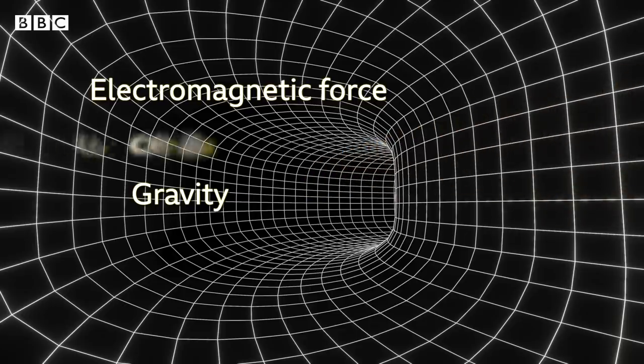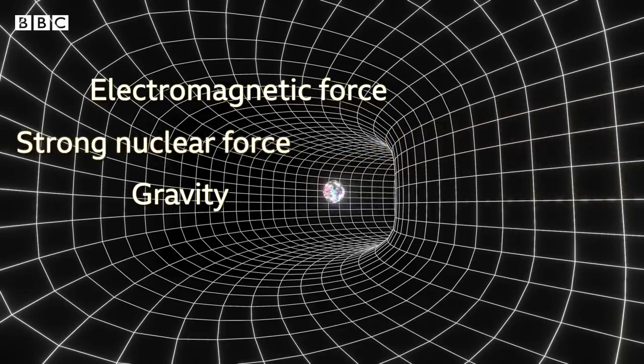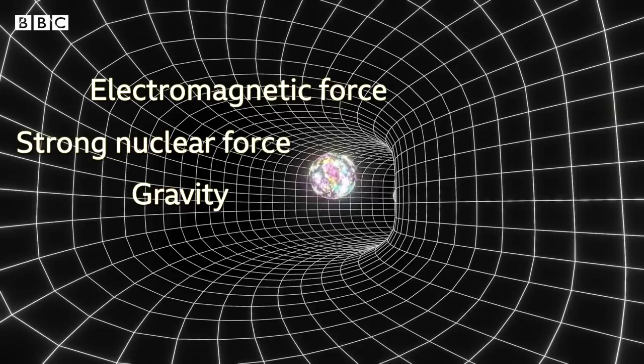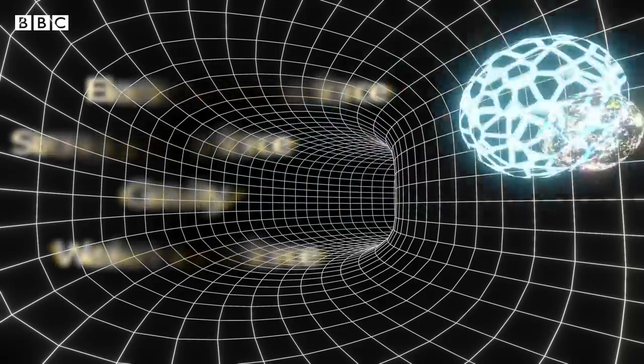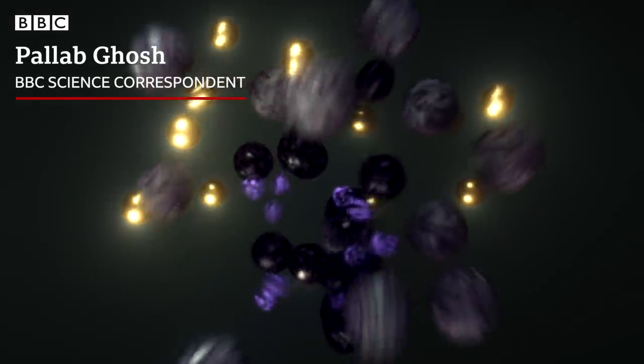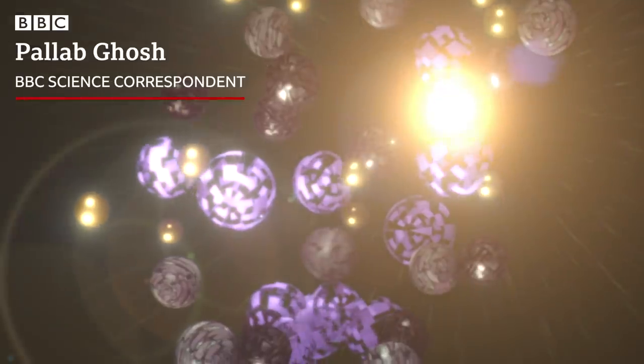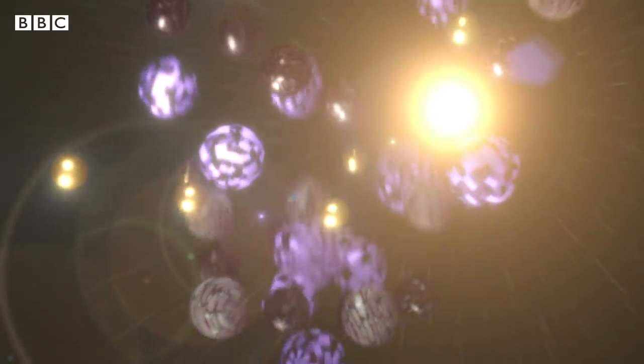One to hold the core of atoms together. This is the strong nuclear force. And another that can be involved in breaking them apart, which is involved in some types of radiation. This is the weak nuclear force. Together these forces explain how the world works, everything from why the sun shines to why things fall over.